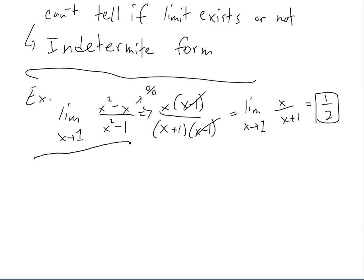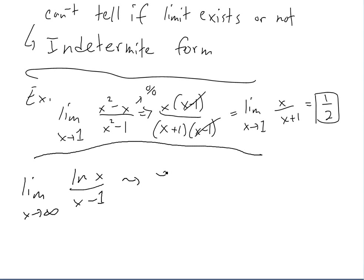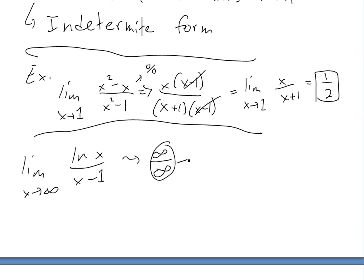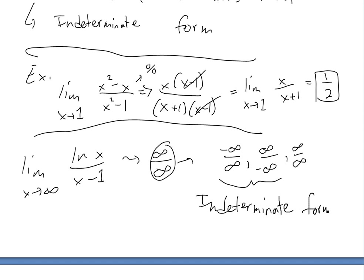Another point: if we were going to infinity — for example, the limit as x → ∞ of ln(x) / x — both the top and bottom go to infinity. In general, if you have infinity over infinity, negative infinity over infinity, or similar forms, these are also indeterminate forms. We can't really determine how to get the limit here.